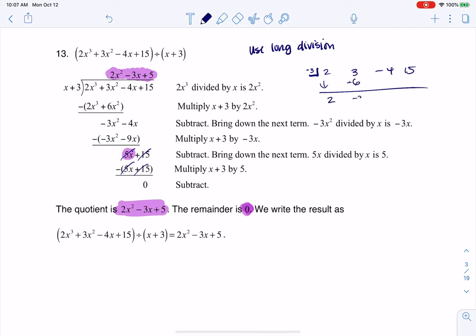And then I can just do this. So negative 6, negative 3, 9, 5, negative 15. Boom, zero. And then I know that since I started with the cubic, this is going to go to a quadratic. So this is 2x squared minus 3x plus 5, remainder zero.